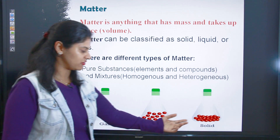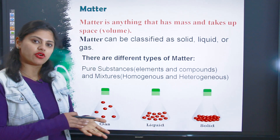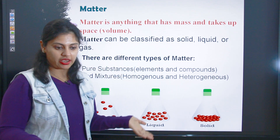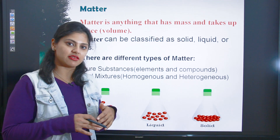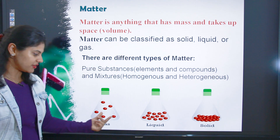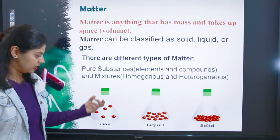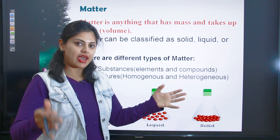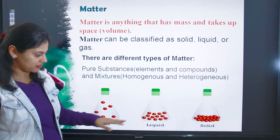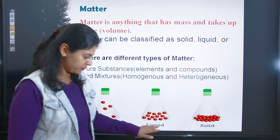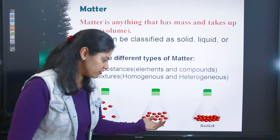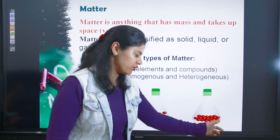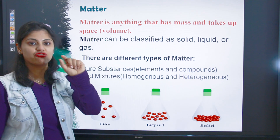Gas can be oxygen, hydrogen, nitrogen — many different kinds. Atmosphere mein hamare kaafi tarah ki gases exist karti hain. You can see the particles of gas in the flask — ye kaafi zyada idhar udhar hain, so gas ke molecules evenly distributed nahi hote, wo kaafi jagah separate ho sakte hain. Similarly liquid particles are not evenly distributed but settled at the bottom, and in solids they are evenly distributed with voids in between.